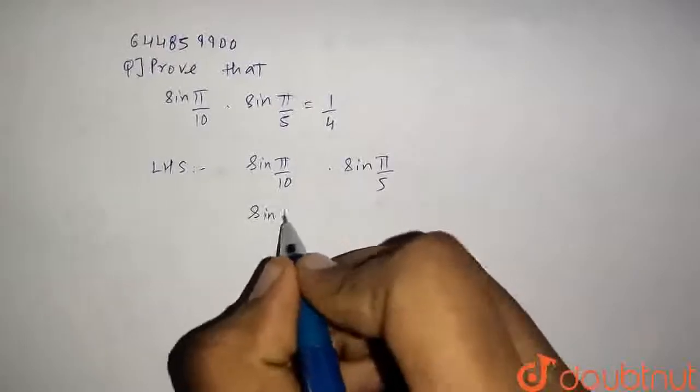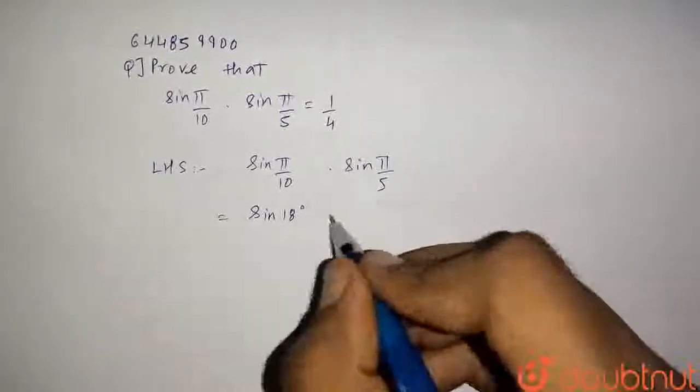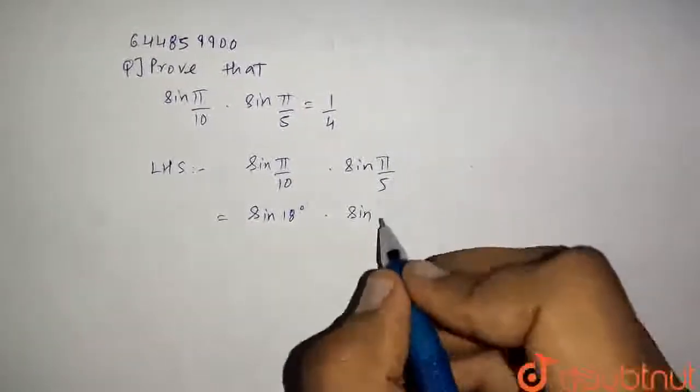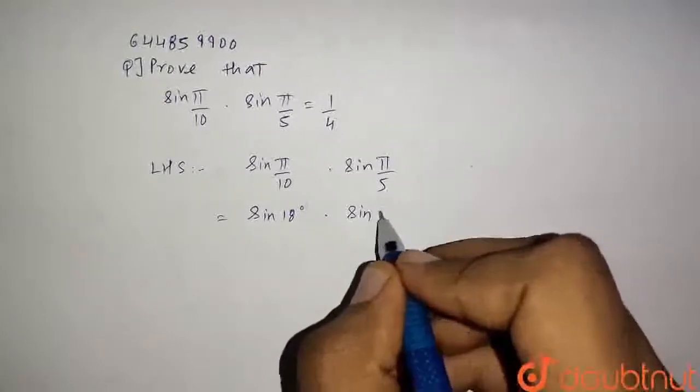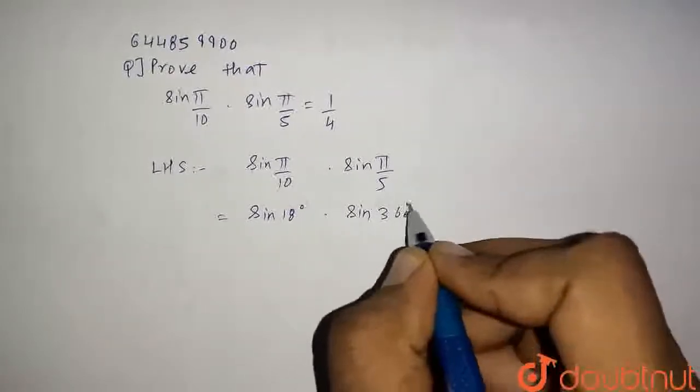So it is equal to sin(18°) × sin of, so 180/5 is sin(36°), 36 degrees.